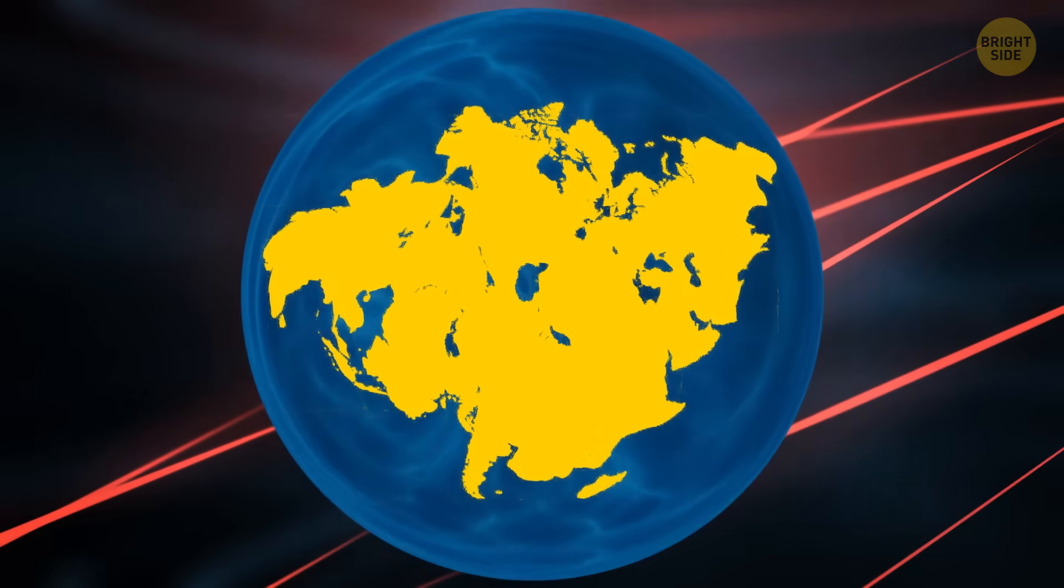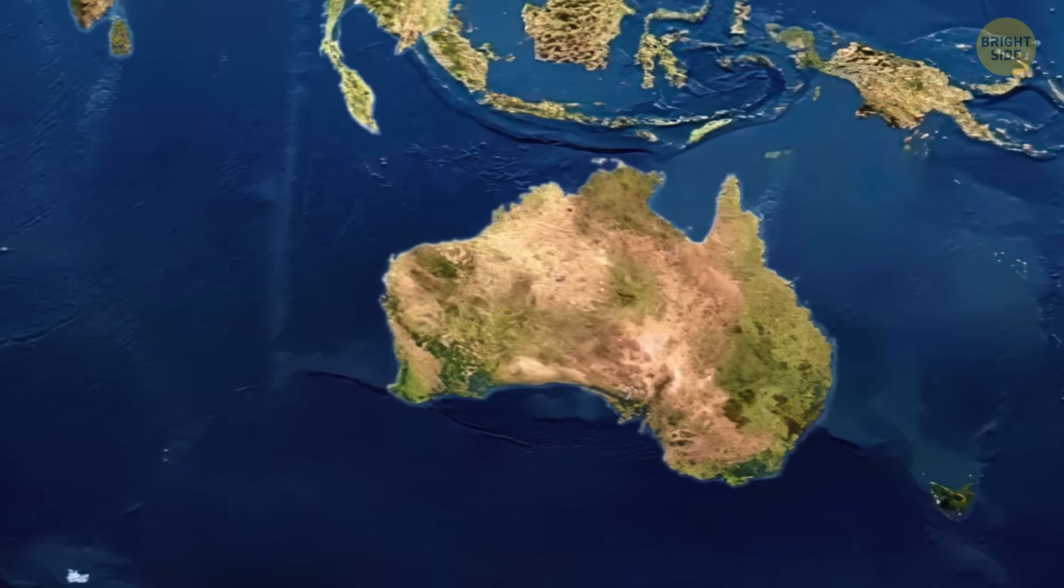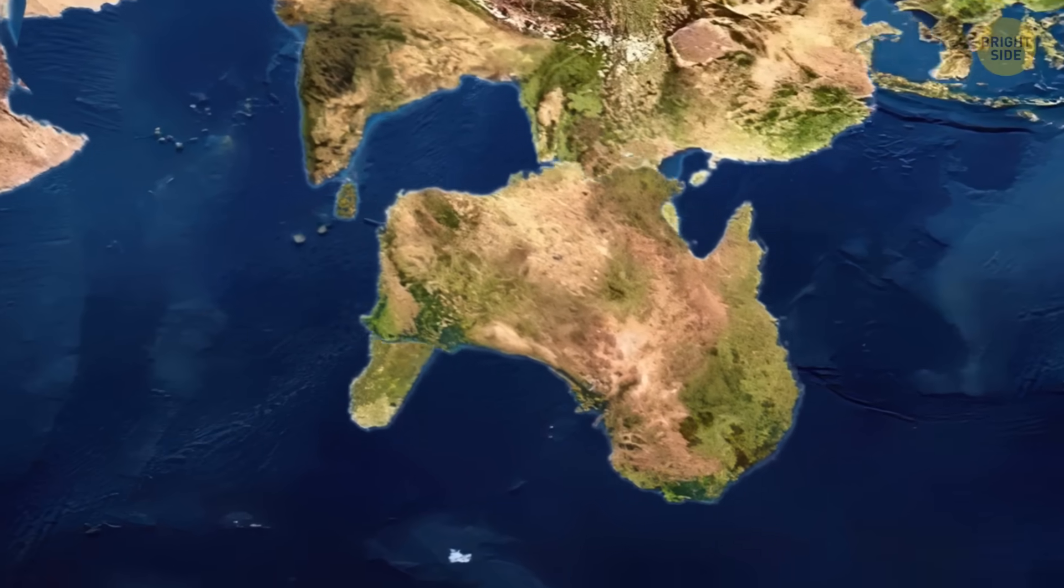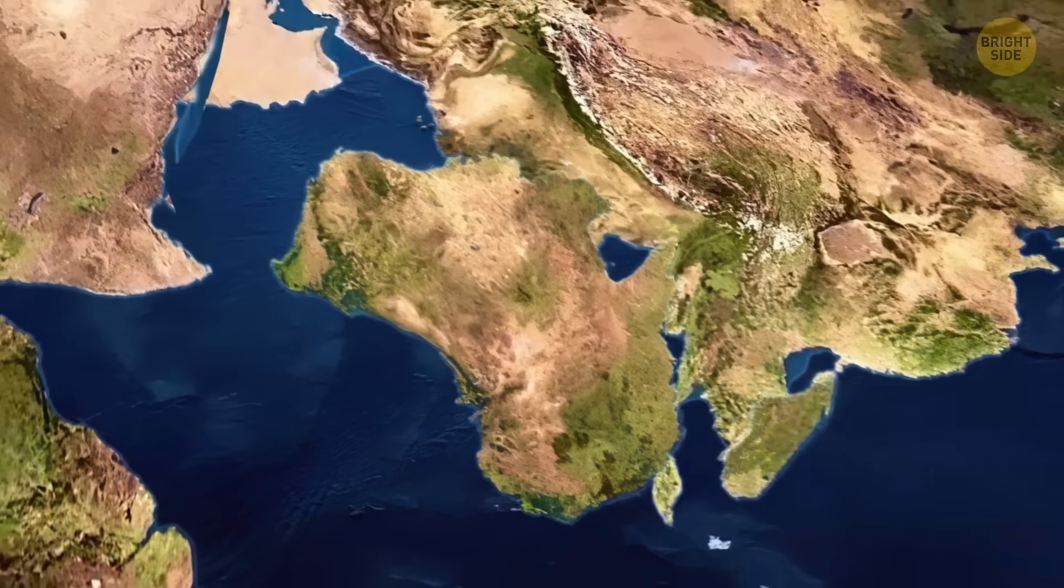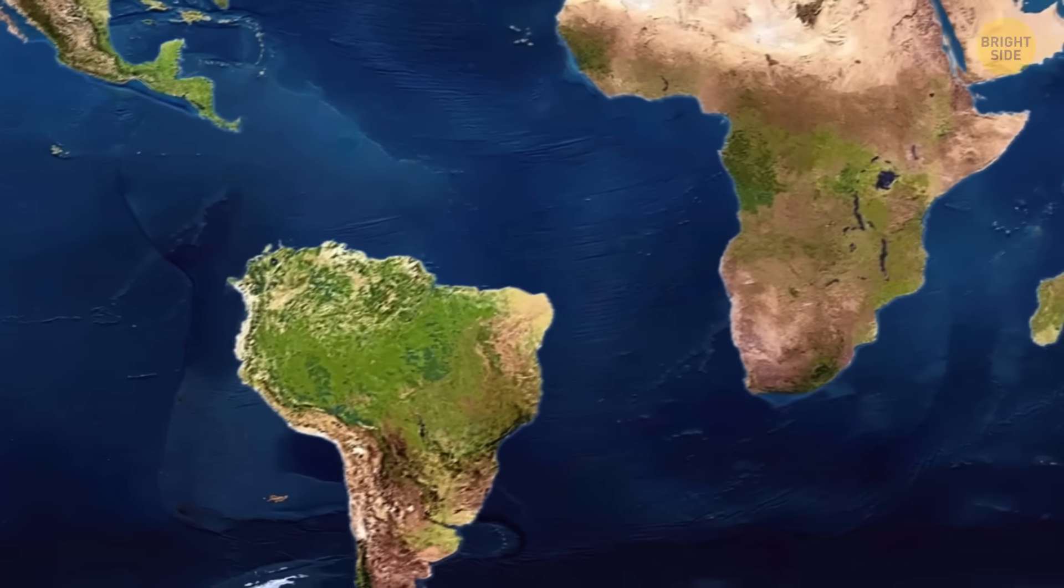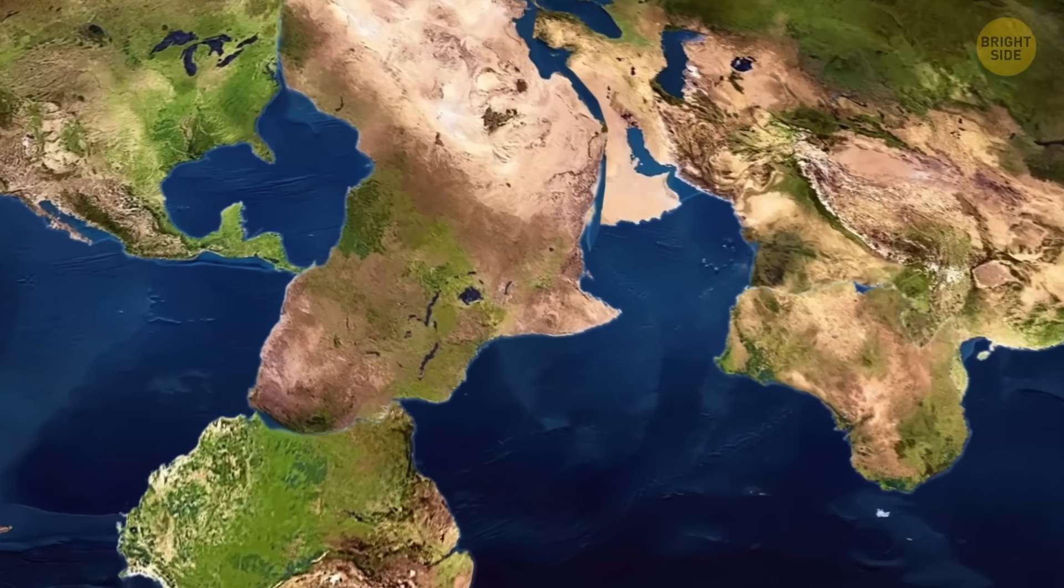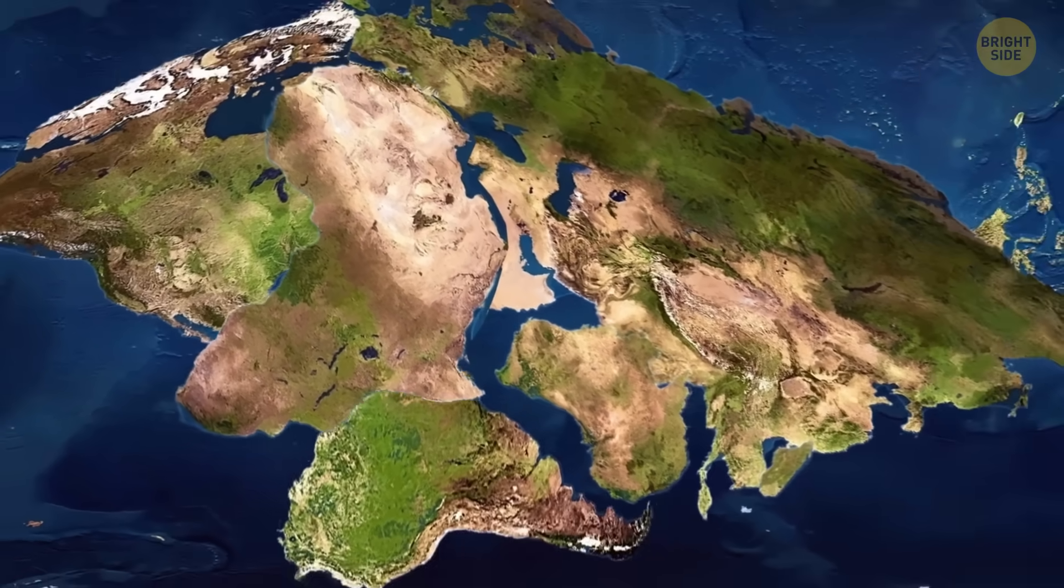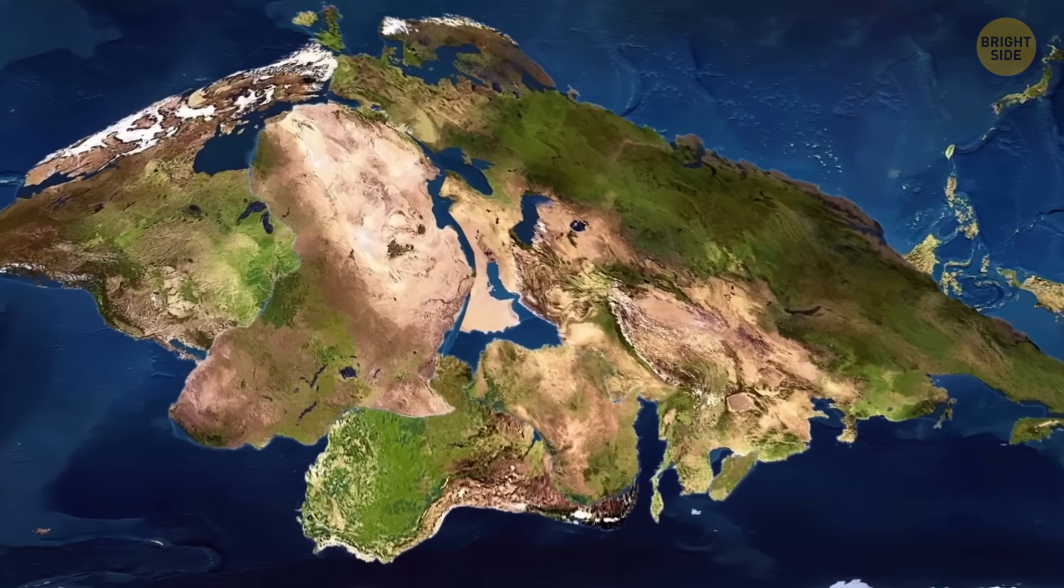With this new ocean comes a new supercontinent, Orica. Australia is currently drifting northwards, like it's trying to find a nice spot at the center of our planet. East Asia and the Americas might join in from both sides. After that, Europe and Africa might link up with the Americas, and boom, Orica.